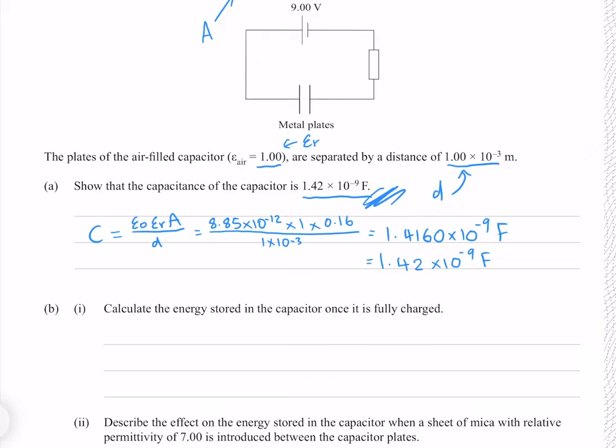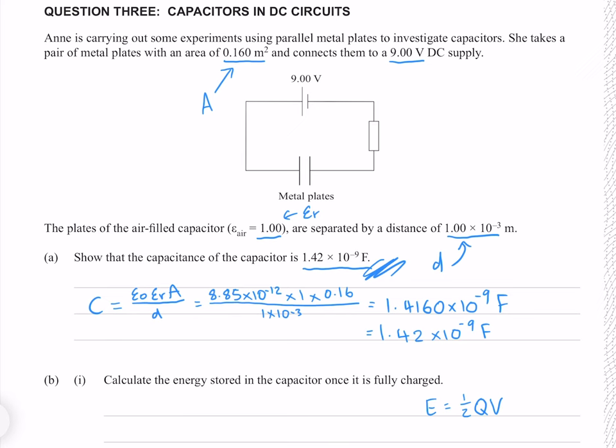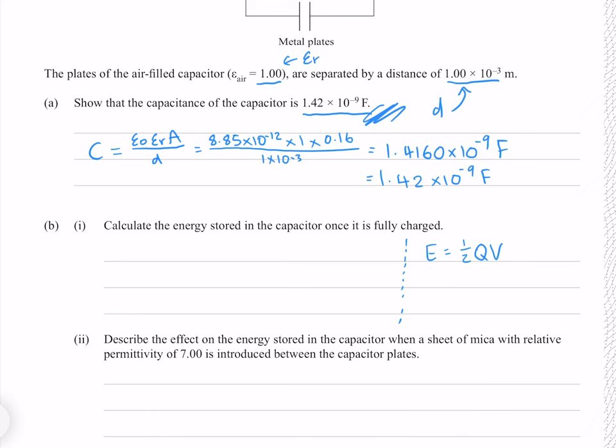Calculate the energy stored in the capacitor once fully charged. The equation for energy stored is E equals half QV. We know the voltage but not the charge, so we use Q equals CV and substitute, giving E equals half CV squared. Putting our numbers in gives 5.75 times 10 to the minus 8 joules to 3 significant figures.